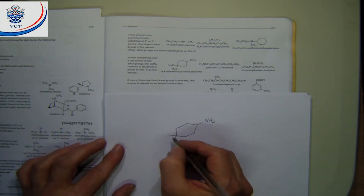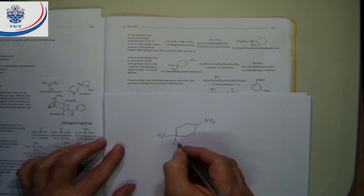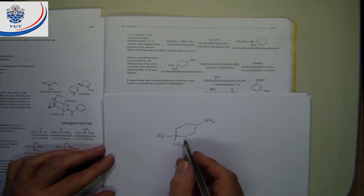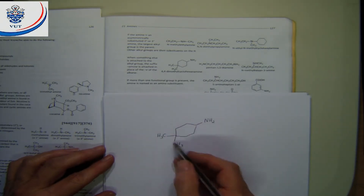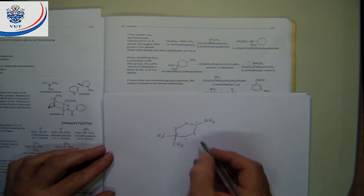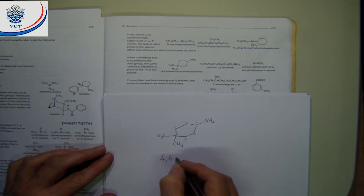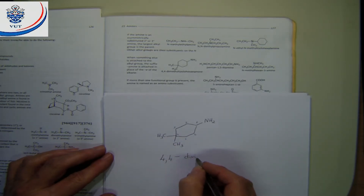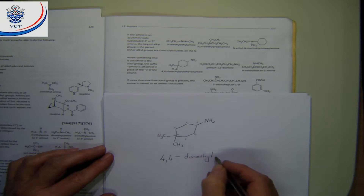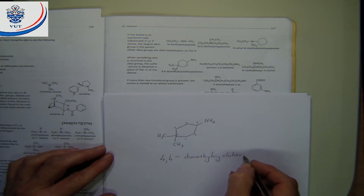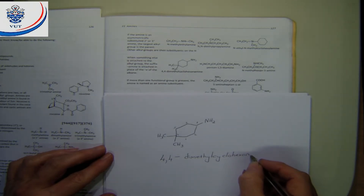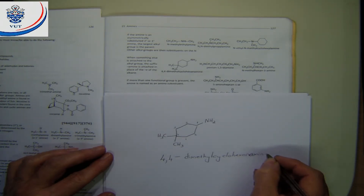But now if you have other substituents on the ring, you number the ring with the amine at position one, going around: two, three, four, five, six. On position four you have a methyl and a methyl — that's dimethyl — so the compound is 4,4-dimethylcyclohexanamine, where the ending -e of cyclohexane is replaced by the word amine.